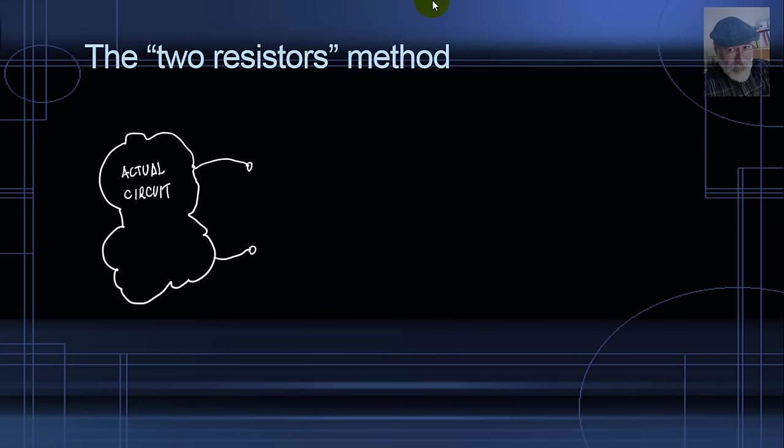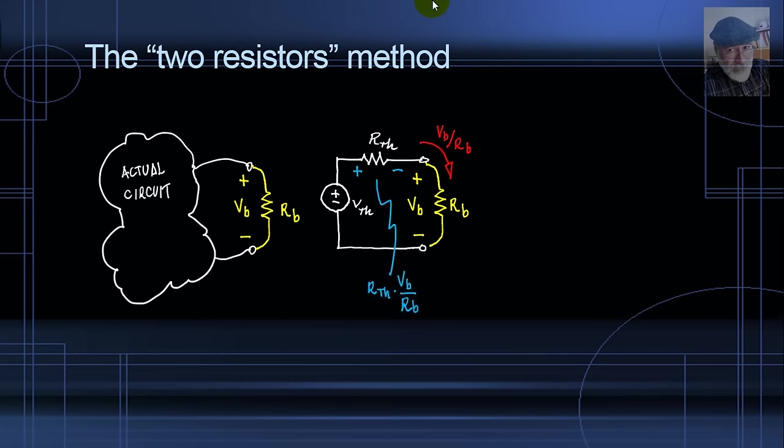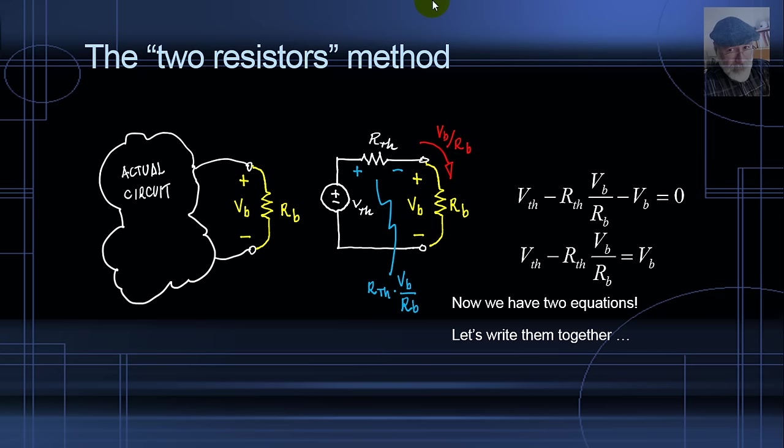Pick another resistor R_B and connect it to the port. Measure the voltage V_B that appears and apply that to the equivalent circuit. Again, the same analysis for current, for drop in R_TH and for the KVL equation. Another equation, same unknowns V_TH and R_TH.